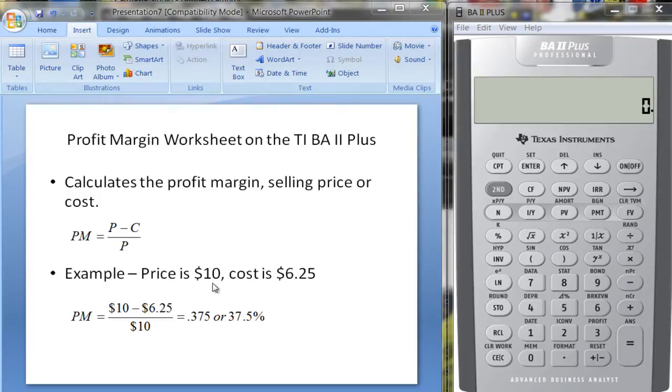Suppose the price is $10 and the cost is $6.25. Well, how do you figure out profit margin? Profit margin is going to be price minus cost divided by price. And in this case, it's going to be 10 minus 6.25 divided by 10, which turns out to be 37.5%.